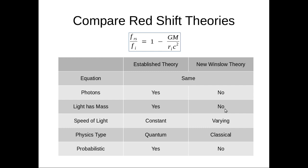The established theory, speed of light is constant. The new Winslow theory is varying. The physics type is quantum versus classical. The new Winslow theory is more based on classical physics than the established theory.